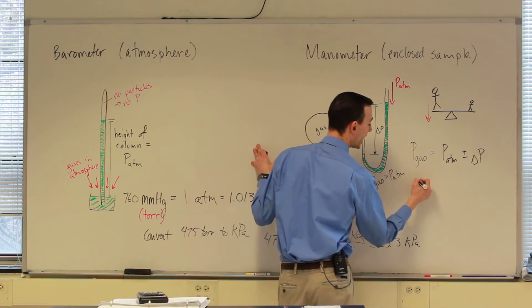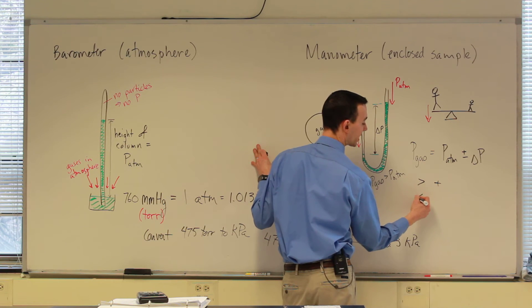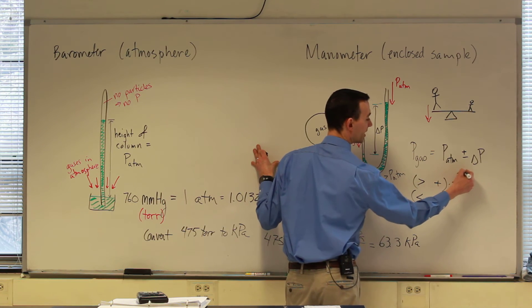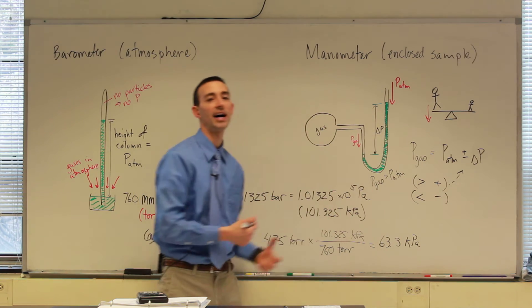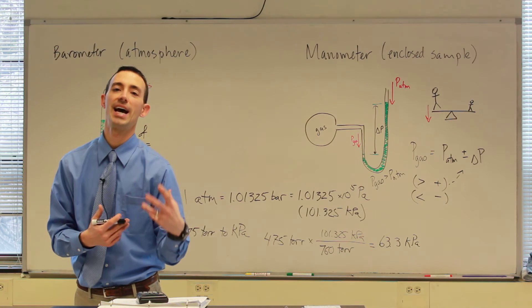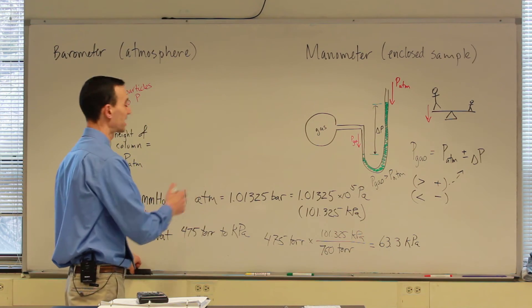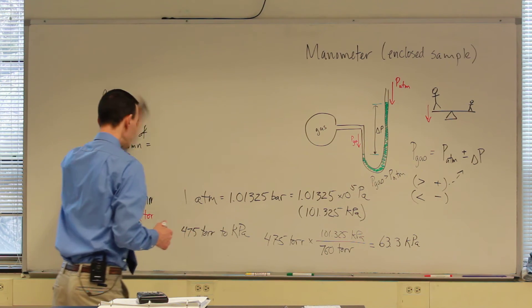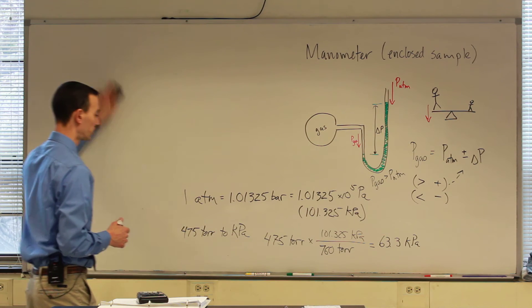When you have the gas pressure greater, that's when you'd use the plus sign. If the gas pressure is less, that's when you would use the minus sign. So you'd have to look at the picture, critically evaluate whether the pressure of the gas is greater or less than the atmosphere, and then decide to add or subtract. So those are some of the tools that we use for measuring gas pressures.